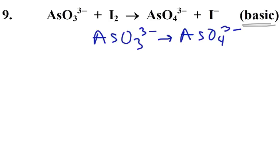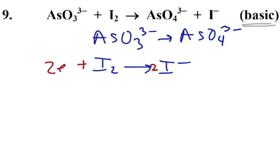We can see our iodine is going to change into iodide. Let's do the iodine first, because it looks simple. I'll put a two in for the iodines. The left side is more positive, so I'll add two electrons. For the first reaction, arsenic balances - that's good.